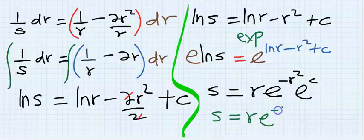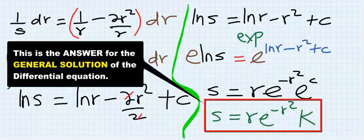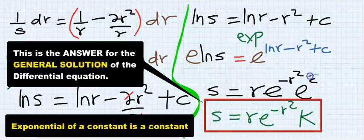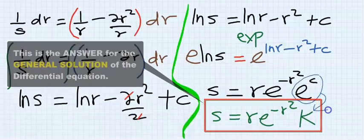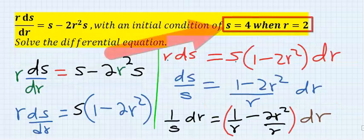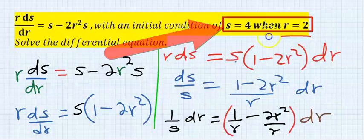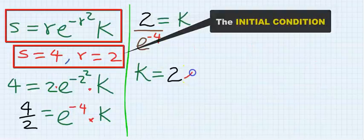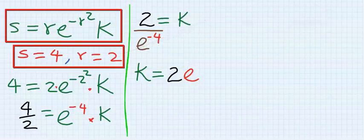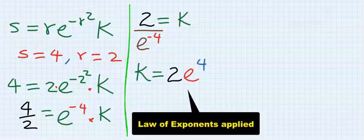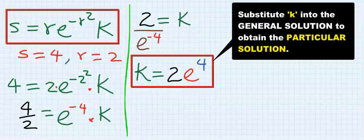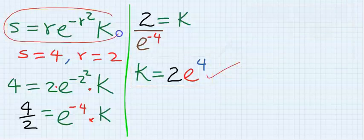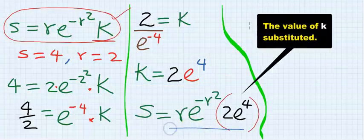That means everything here now is becoming this. Next, consider the initial condition, which is this. k can be written as 2 over e to the 4. If I take this exponential up, it will become positive. This is now the value of k. I will replace the value of k in my general solution.